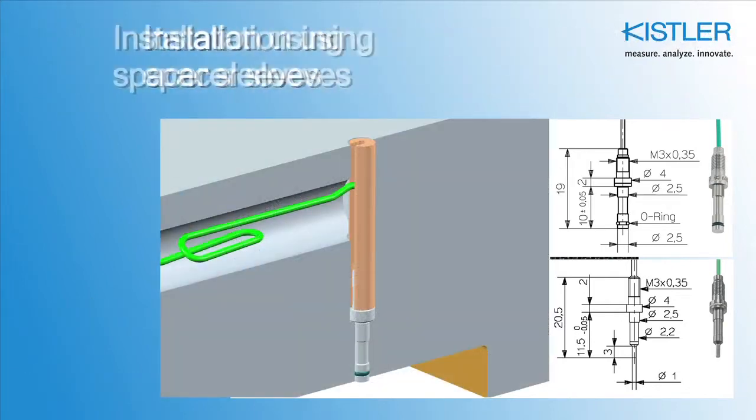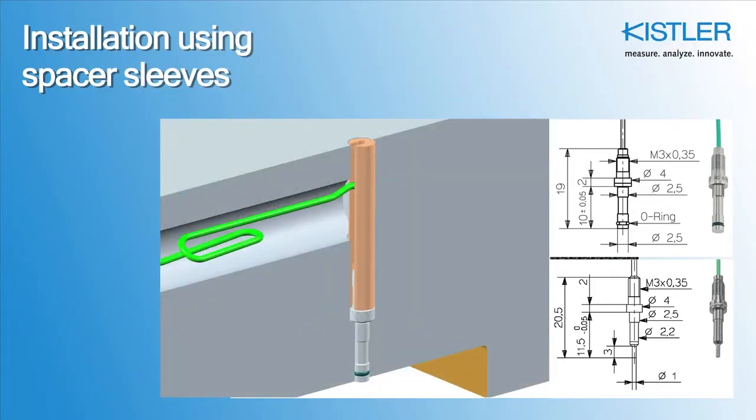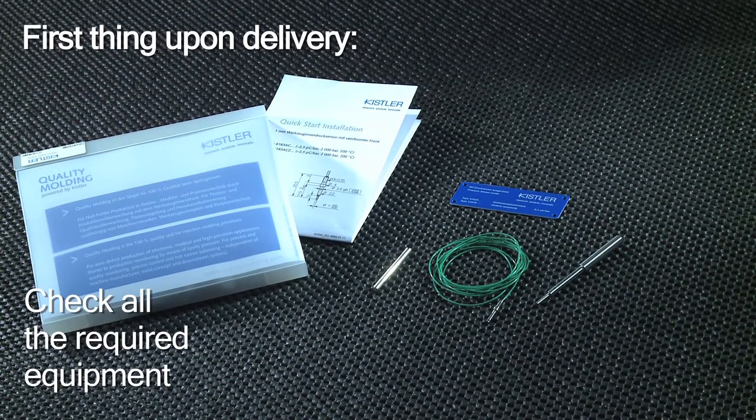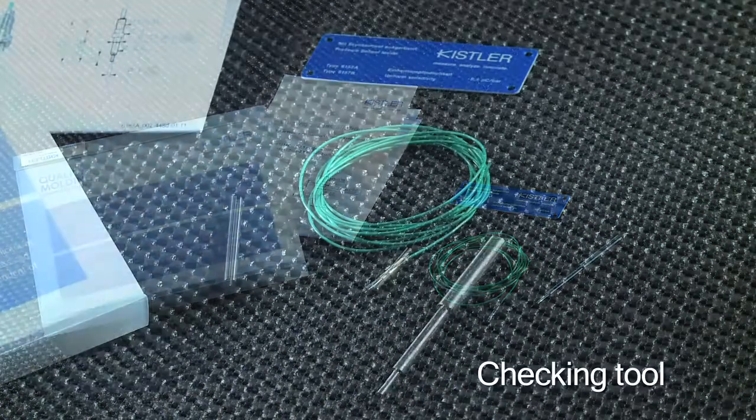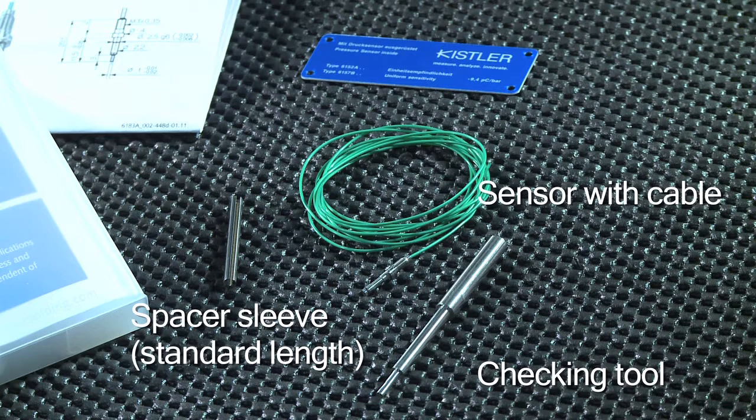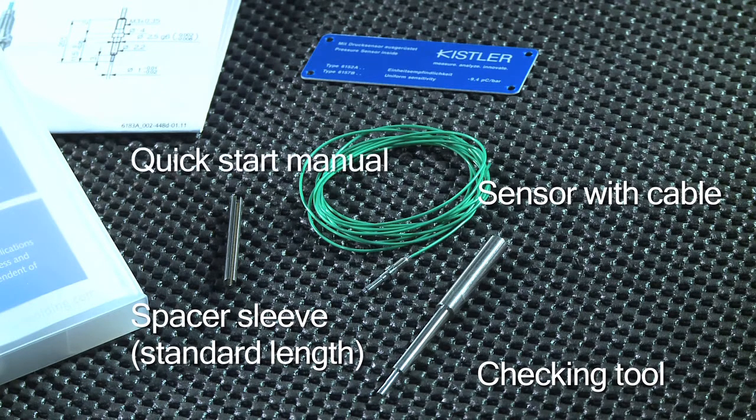We show you how to place these types of sensors into a mold using spacer sleeves. First, you should make sure that the delivery is complete. The box should contain a checking tool, a standard length spacer sleeve, the sensor with cable, a quick start manual, and an ID plate.